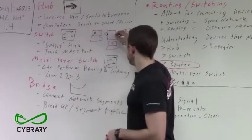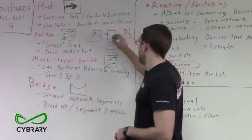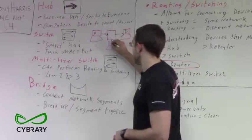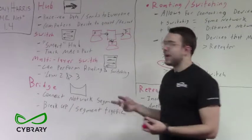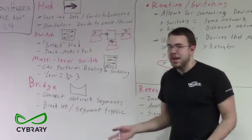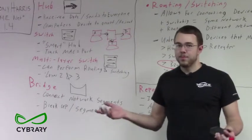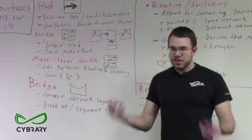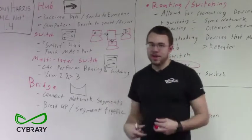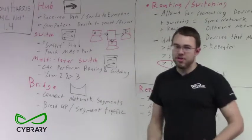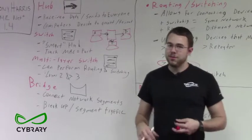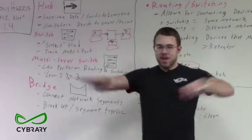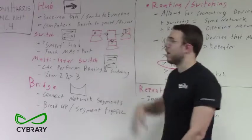So the hub takes the data that A sends and forwards it to both B and C. That packet was meant for B — so why did it send it to C? Because hubs are dumb. They don't inspect the packet. They don't inspect which MAC address or which IP address it's for. They just take the packet and send it to every port except the one it came in on.